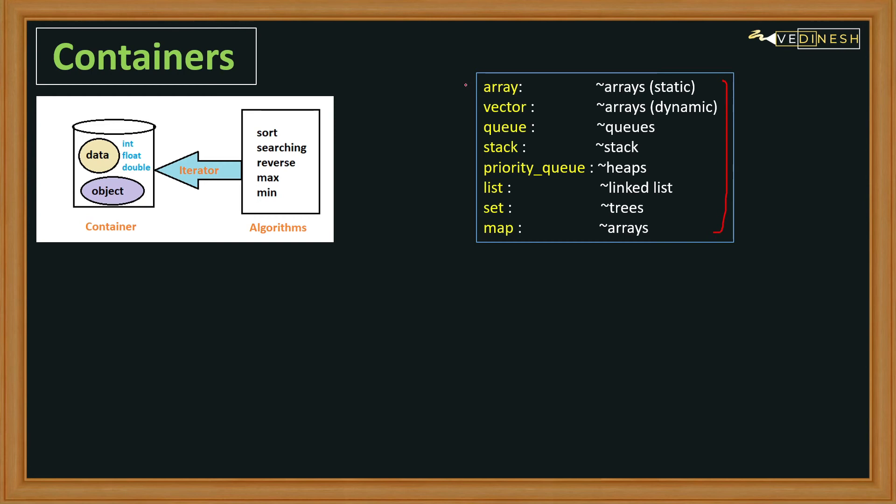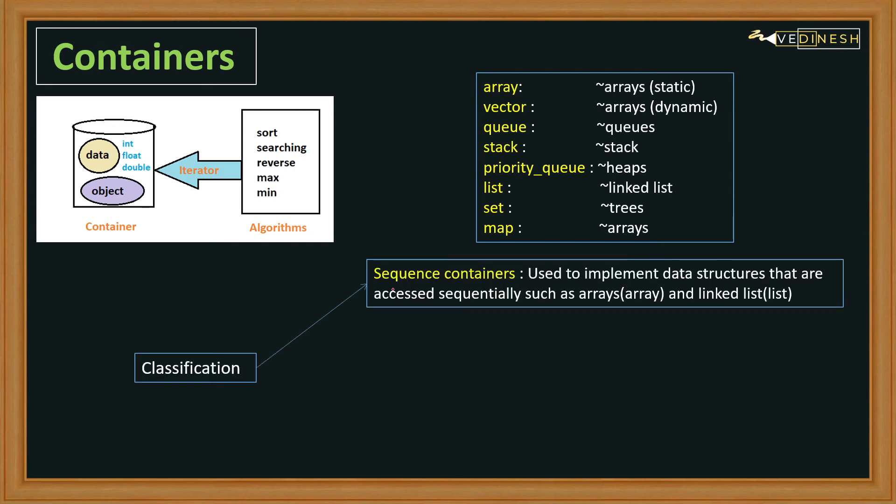Now moving forward, let's understand the classification of containers. First come the sequential containers. These are used to implement data structures that can be accessed sequentially or linearly, like arrays and linked lists.